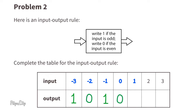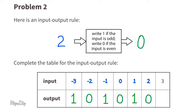When the input is positive one, that's odd — I'll write one for the output. When the input is two, that's even — I'll write zero for the output. When the input is three, that's odd — I'll write one for the output.